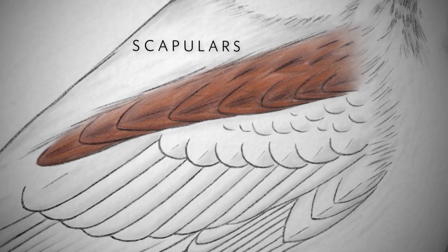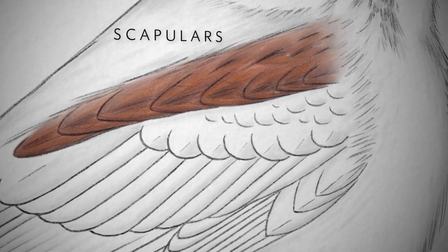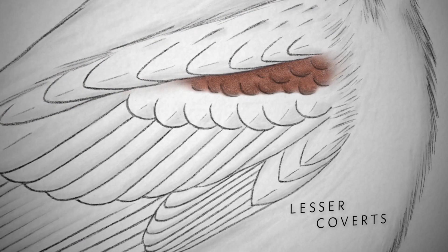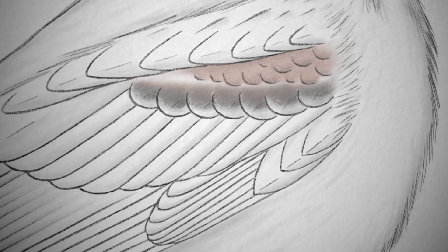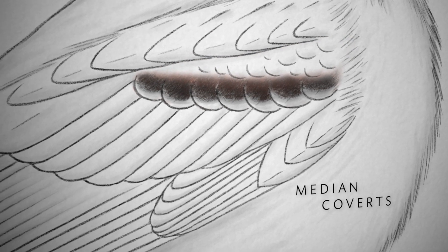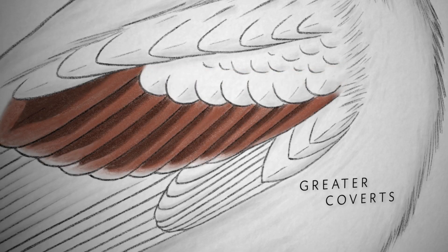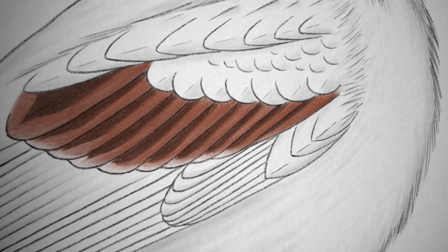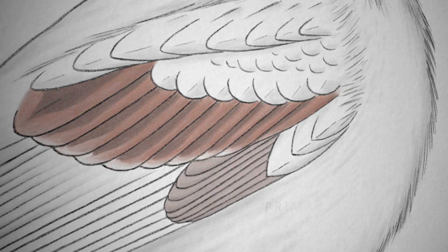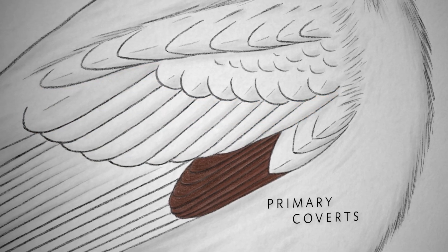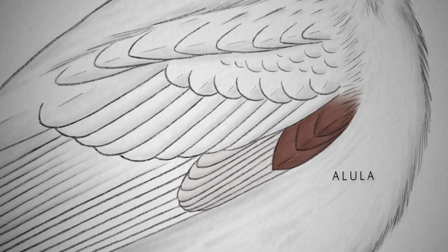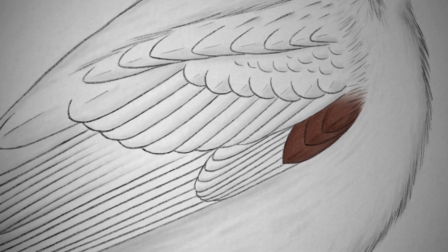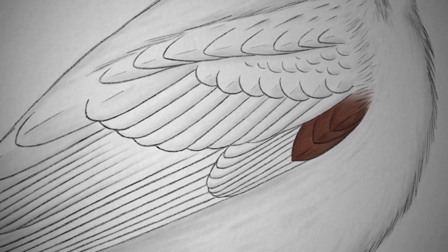Moving on to the wing: the scapulars are the feathers attached to the bird's shoulder, a region between the mantle and the wing; sometimes they cover the lesser and median coverts when the wing is folded. The lesser coverts are the smallest of all the wing coverts and are found on the forewing. Next we find the median coverts, which can sometimes show a distinct pattern. The greater coverts protect the base of the inner wing flight feathers; they can show a coloured wing bar visible even from far away. The primary coverts protect the base of the outer wing flight feathers. The alula — these small feathers, usually three of them — can be moved independently to perform specific functions in flight; sometimes not visible, hidden by the breast feathers.